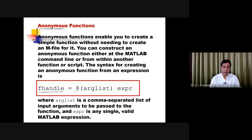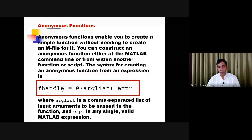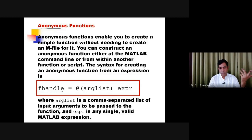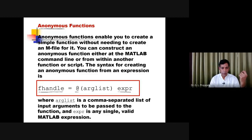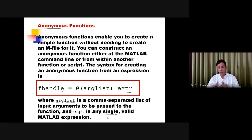For creating the anonymous function, you just use the '@' symbol. Then whatever the argument list you have, you supply the input to the function, and here you have the expression. The argument list is a comma-separated list of input arguments, just like we have in function input. The expression is any single valid MATLAB expression — this is important. You are creating the anonymous function for a single expression.